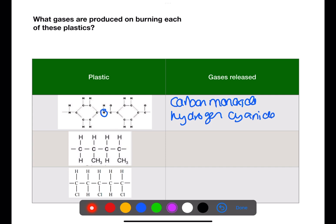This next plastic contains only carbon and hydrogen. This will burn to produce carbon monoxide. The final plastic contains carbon and hydrogen and will produce carbon monoxide. It also contains chlorine, so will produce hydrogen chloride upon burning.